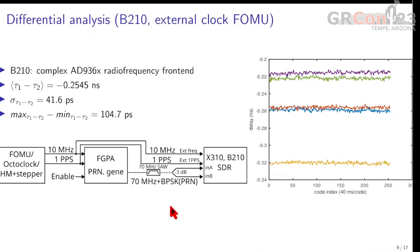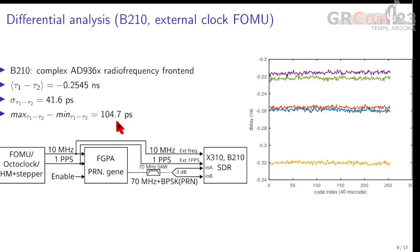Now if we look at the differential measurement, comparing one recording on one channel with respect to the other, this time the result is much better. Previously we had fluctuations in the tens of nanoseconds; now the y-axis is also graduated in nanoseconds but the fluctuations are only 20 picoseconds. Over these five measurements we have a 100 picosecond delay fluctuation, an offset of about 250 picoseconds from one channel with respect to the other, and a standard deviation of about 40 picoseconds.